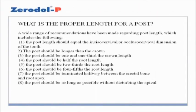What is the proper length for a post? A wide range of recommendations have been made regarding post length, which includes: 1. The post length should equal the incisocervical or occlusocervical dimension of the tooth. 2. The post should be longer than the crown. 3. The post should be 1 and 1 third the crown length. 4. The post should be half the root length. 5. The post should be 2 thirds the root length. 6. The post should be 4 fifths the root length. 7. The post should be terminated halfway between the crestal bone and root apex. 8. The post should be as long as possible without disturbing the apical seal.